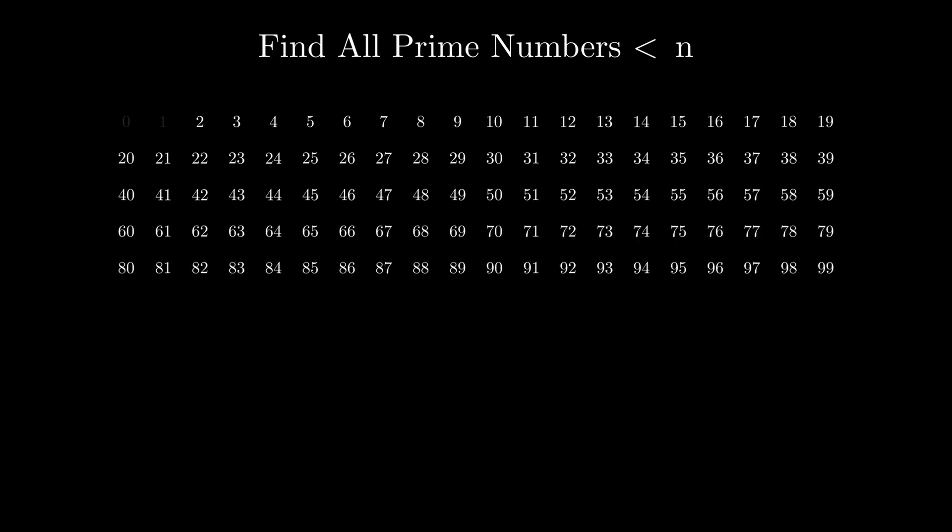The naive and slow approach to this problem might be to go through all the numbers one by one, and for each number, check if it has any divisors other than 1 and itself. So, we would start from 2, check if it has any divisors other than 1 and 2 itself, no, therefore it's prime.